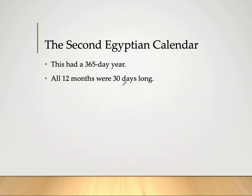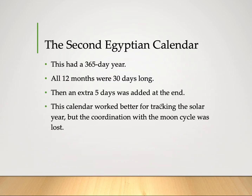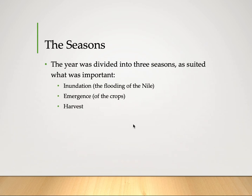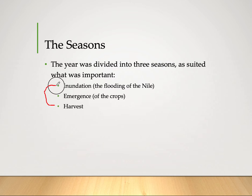An extra five days was added at the end of the year. This calendar worked better for tracking the solar year, but the coordination with the moon cycle was lost. With this calendar, the year was divided into three seasons suited to what was important: first, the inundation — the flooding of the Nile; second, the emergence of the crops; and third, the harvest. After harvesting, it would return again to the flooding of the Nile, completing the cycle.